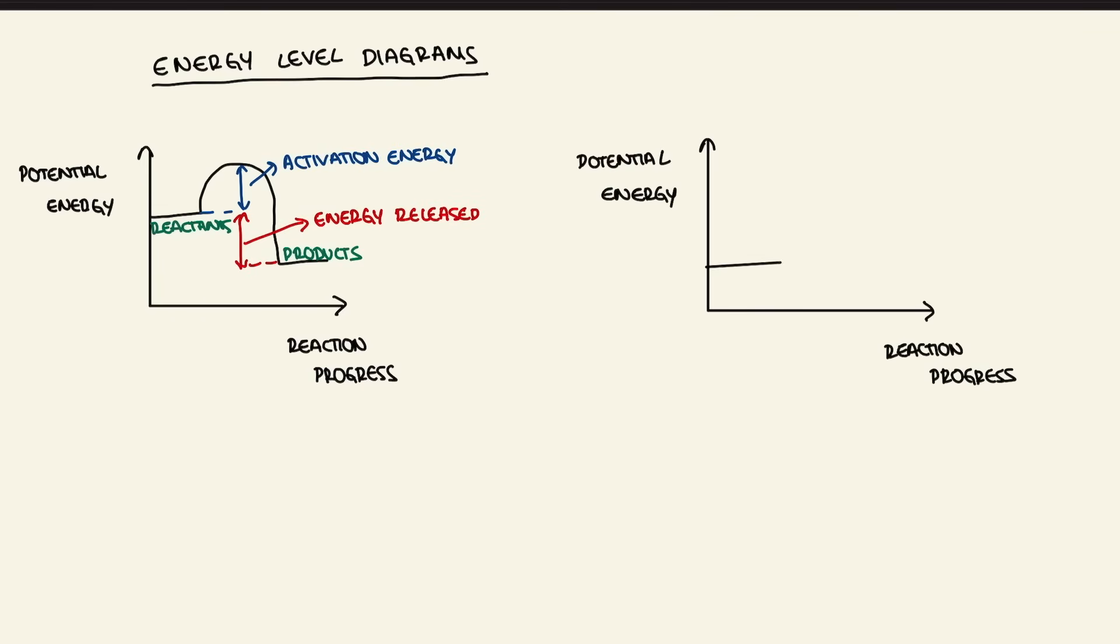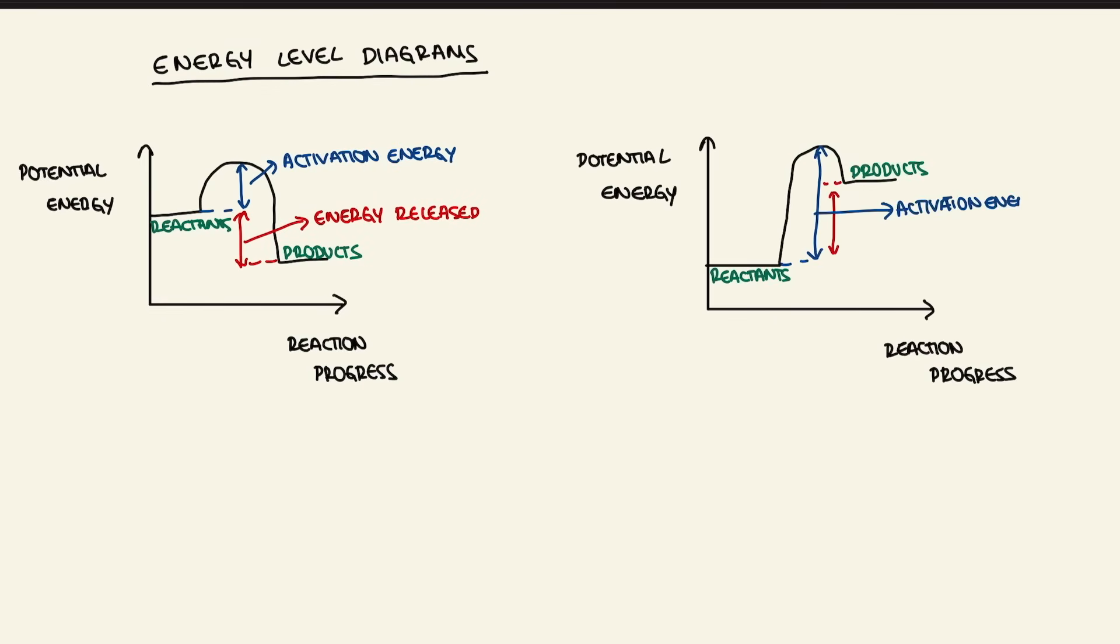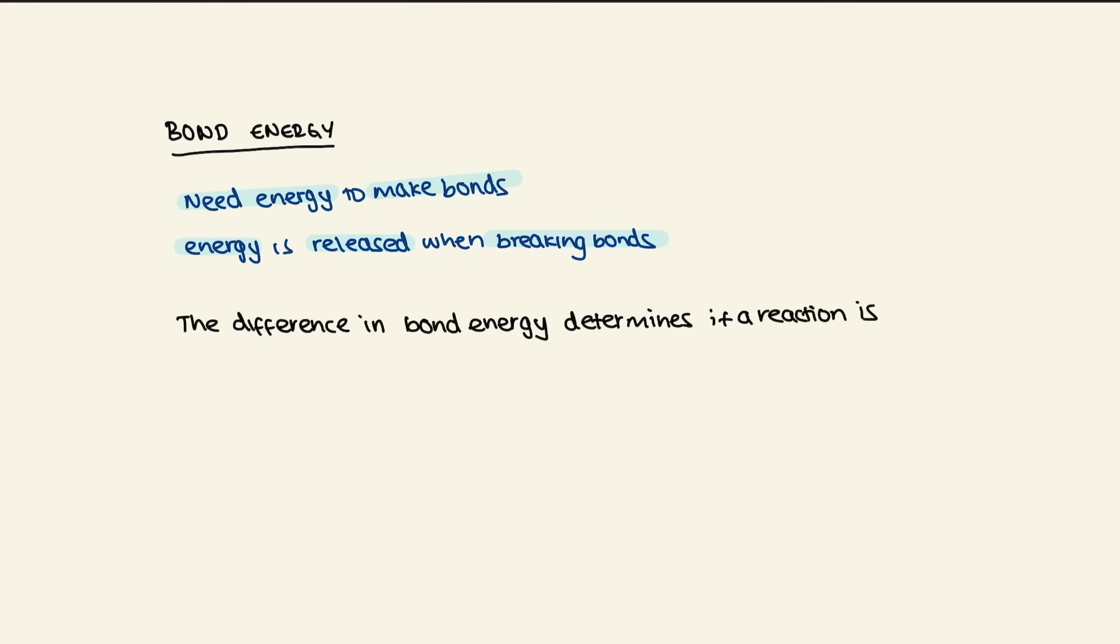When talking about energy level diagrams, you need to show the energy change in a reaction. Exothermic reactions have products lower in energy than reactants, and endothermic reactions have products higher in energy. When talking about bond energy, energy is required to break the bonds and released when forming the bonds. The difference in bond energies determines if a reaction is exothermic or endothermic.